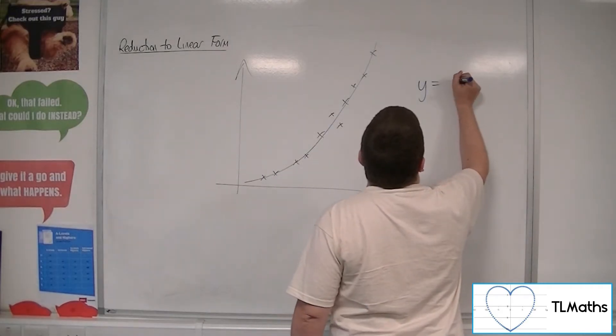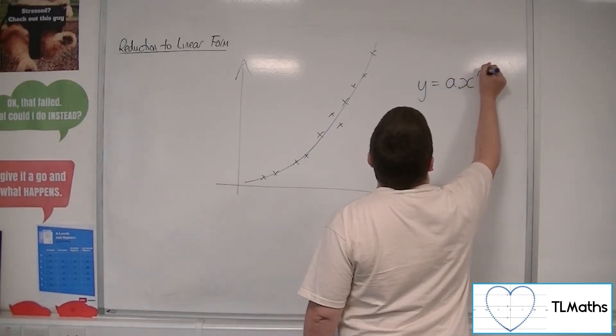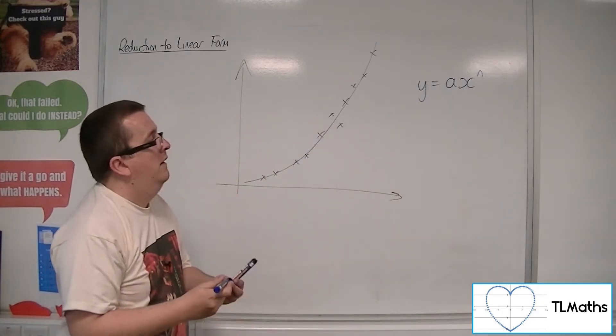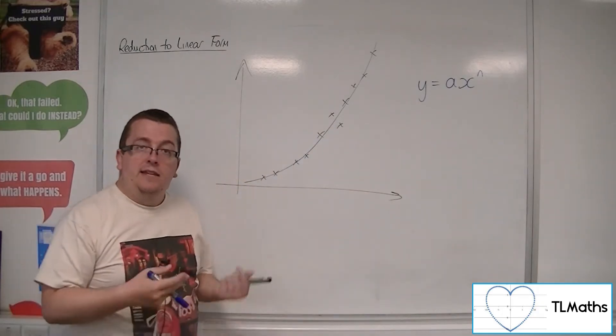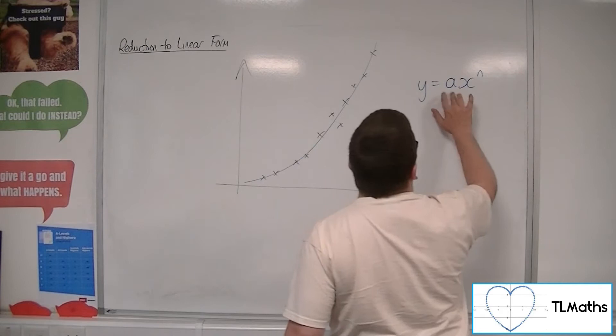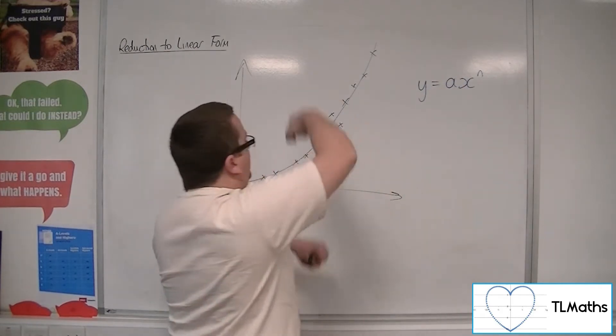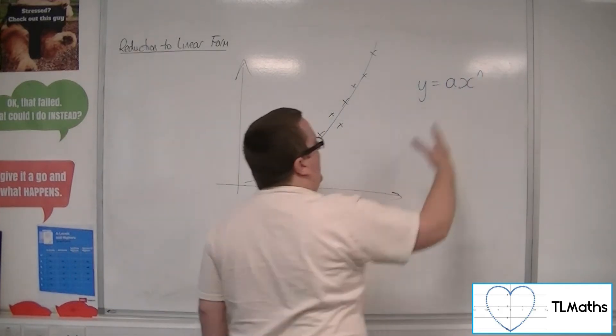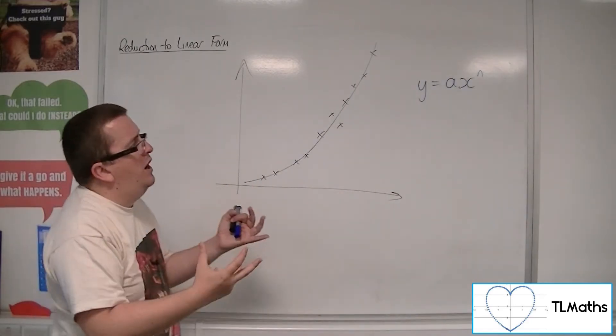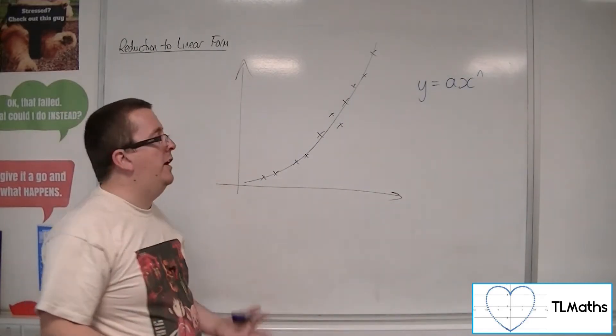So we're going to say that it's something like, perhaps, fitting a function of y equals ax to the n. So a just multiplying, allowing that stretch, and you've got this x to the n, because you don't know what that power is necessarily going to be.